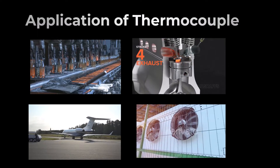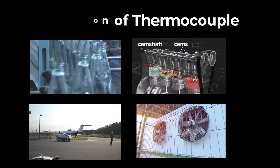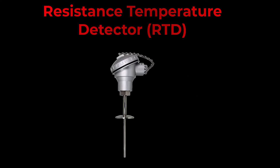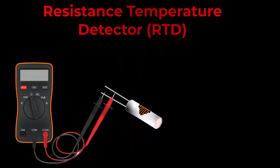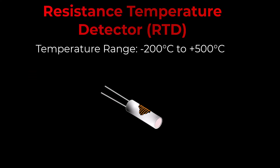Next, meet the RTD — the precision champion. Its correlation of resistance with temperature makes it perfect for laboratories and processes that demand accuracy. RTD stands for Resistance Temperature Detector. It is a type of temperature sensor that measures temperature by correlating the resistance of a metal with temperature changes. RTDs are known for their high accuracy and stability. The measuring range of an RTD lies between minus 200 degrees Celsius and 500 degrees Celsius.